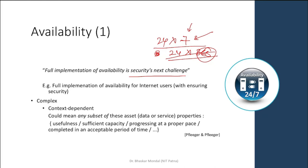Full implementation of availability for internet users while ensuring security is quite complex and context dependent. For example, even if Gmail or Facebook keeps their servers up 24x7, if your local service provider cannot give you internet connectivity, availability is still hampered. Where you are staying and what facilities you have all depends.